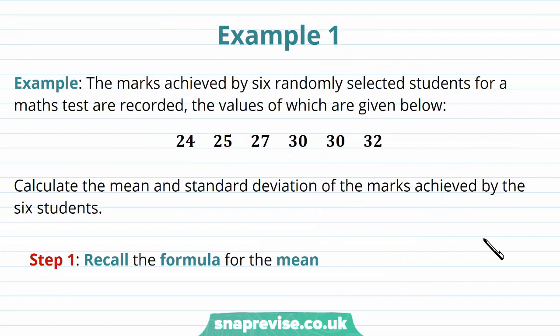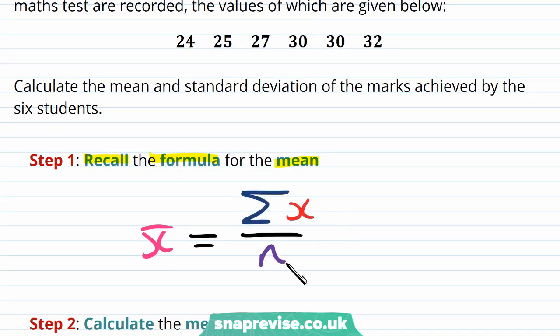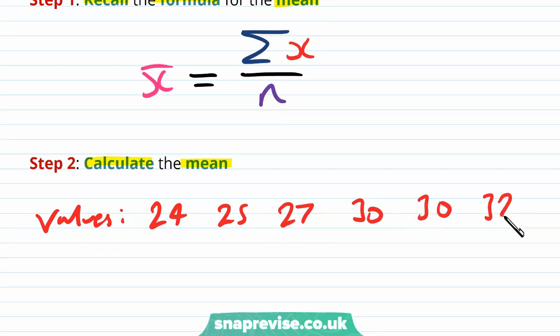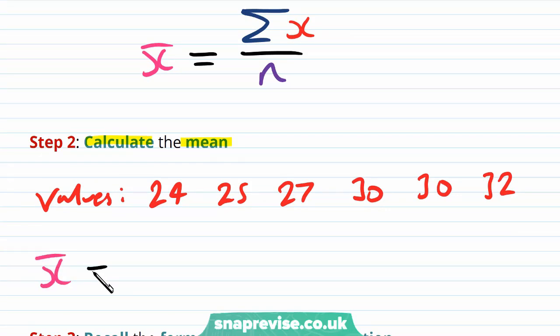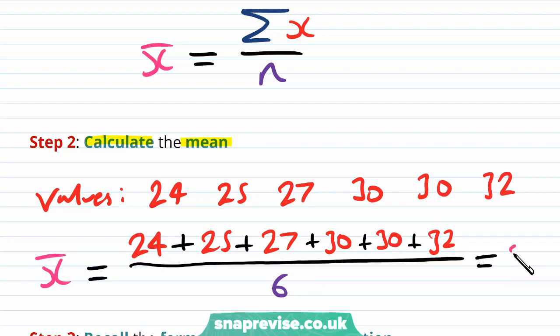Our first example tells us that the marks achieved by six randomly selected students from a maths test are 24, 25, 27, 30, 30, and 32. We are asked to calculate the mean and standard deviation. The mean X-bar is calculated by taking the sum of X divided by n. So X-bar equals (24 + 25 + 27 + 30 + 30 + 32) divided by 6, which gives us 28.